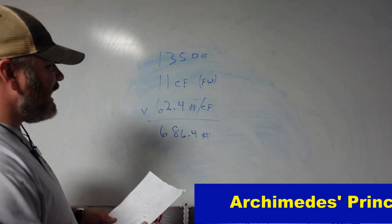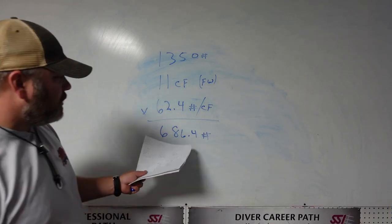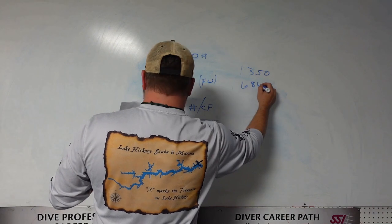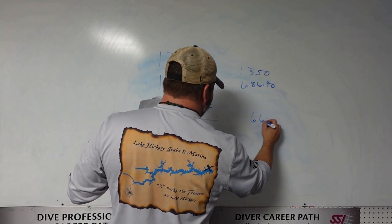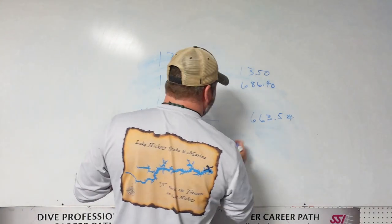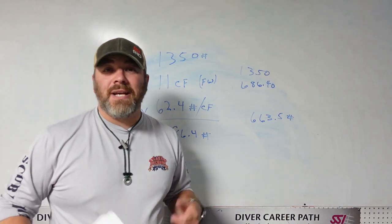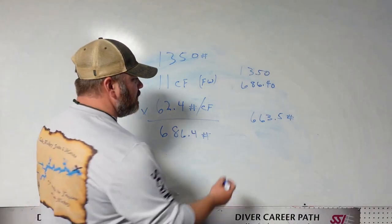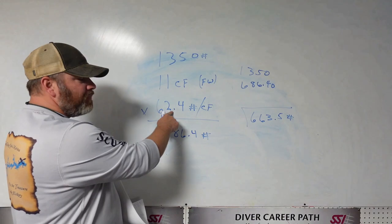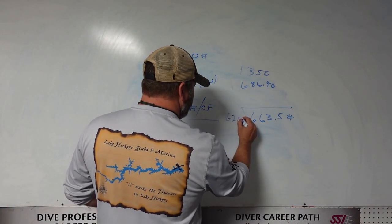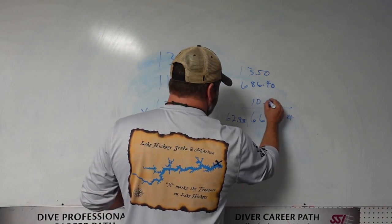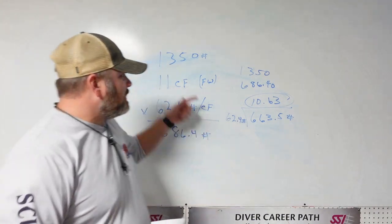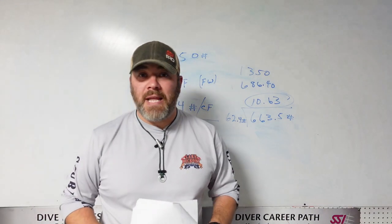That's the buoyant lifting force it has underwater. Now to get the difference, all I've got to do is subtract that number from the original number. So I take 1,350 minus 686.4, and that gives me 663.5 pounds of lift needed. To determine how much cubic footage that's going to be, I simply divide it by how much a cubic foot of water weighs — 62.4 pounds — and that gives me 10.63 cubic feet of water that needs to be displaced to lift that object. This is the basic arithmetic in the imperial system.